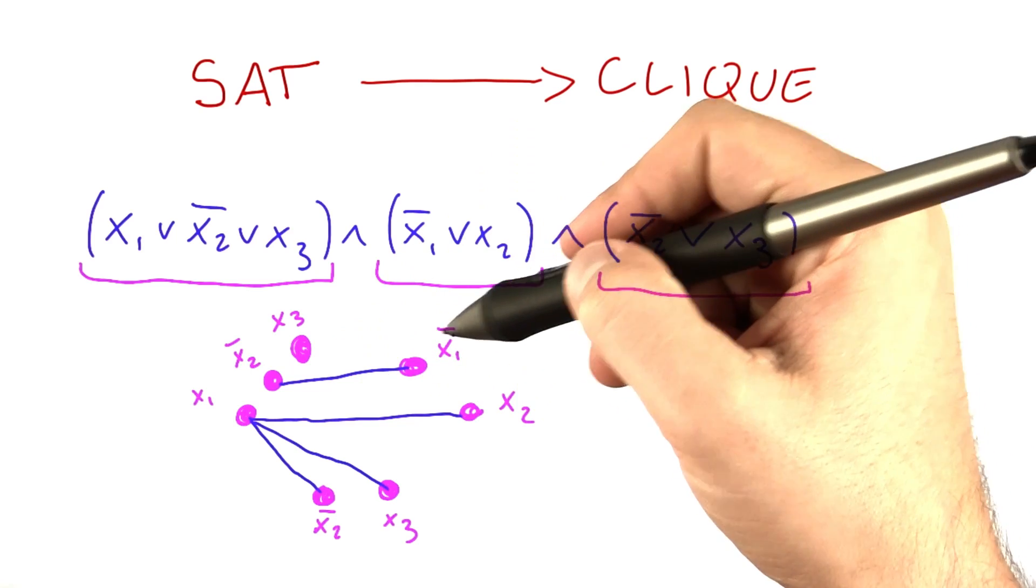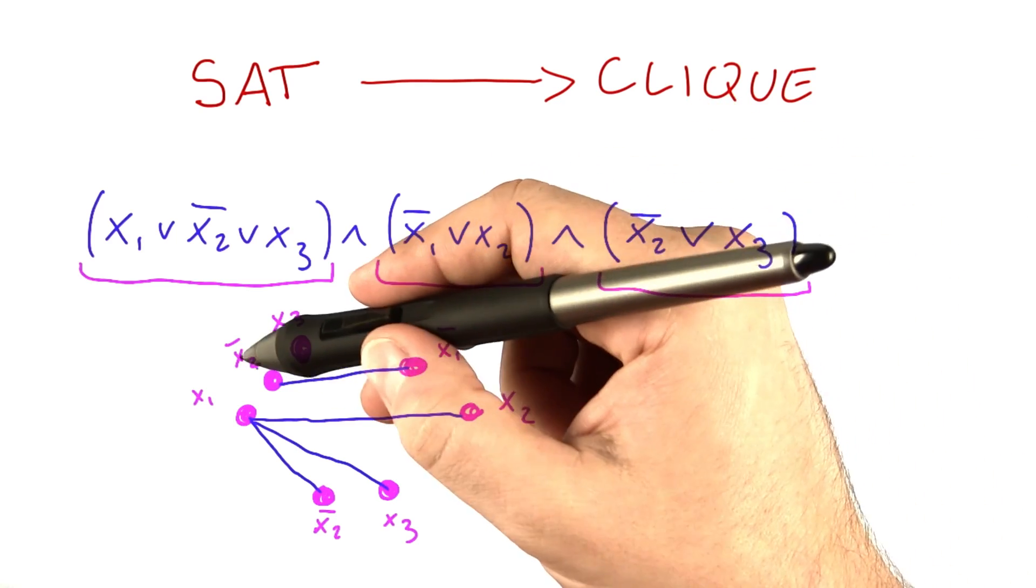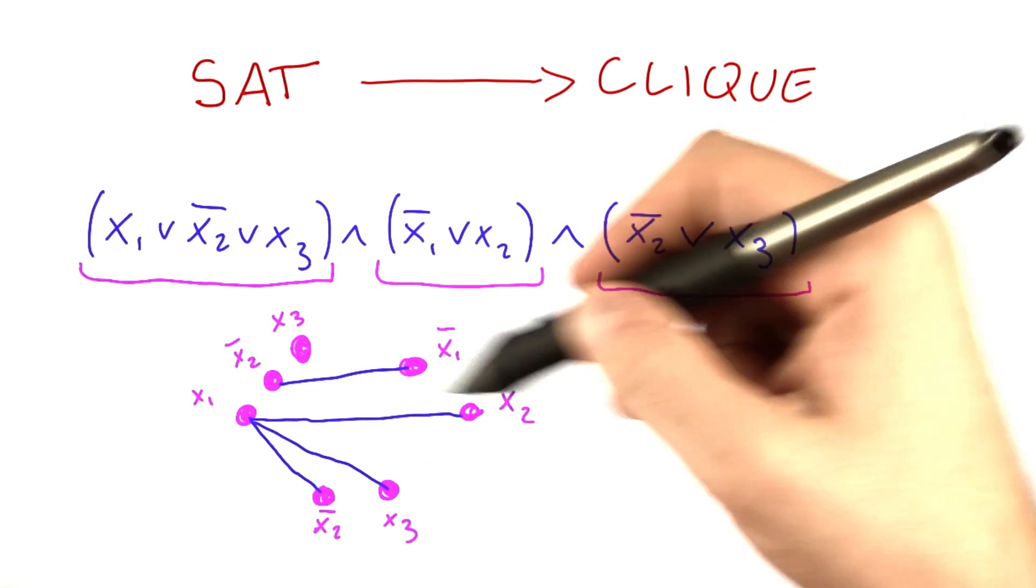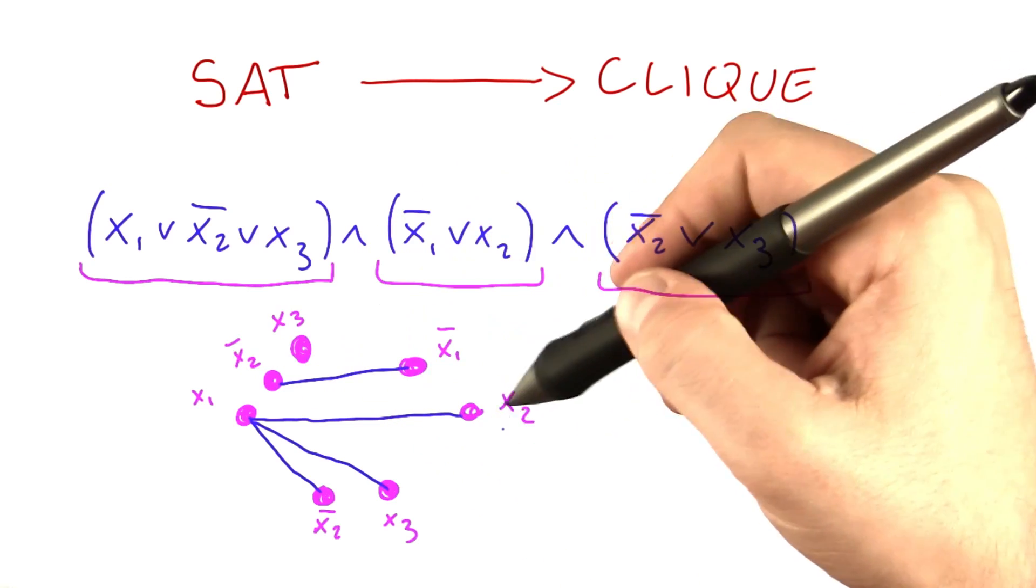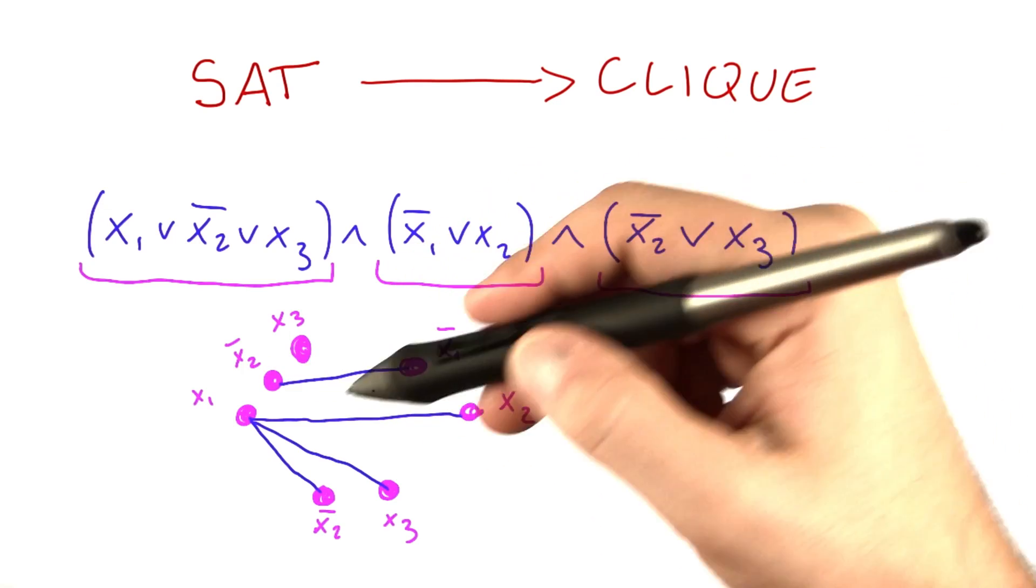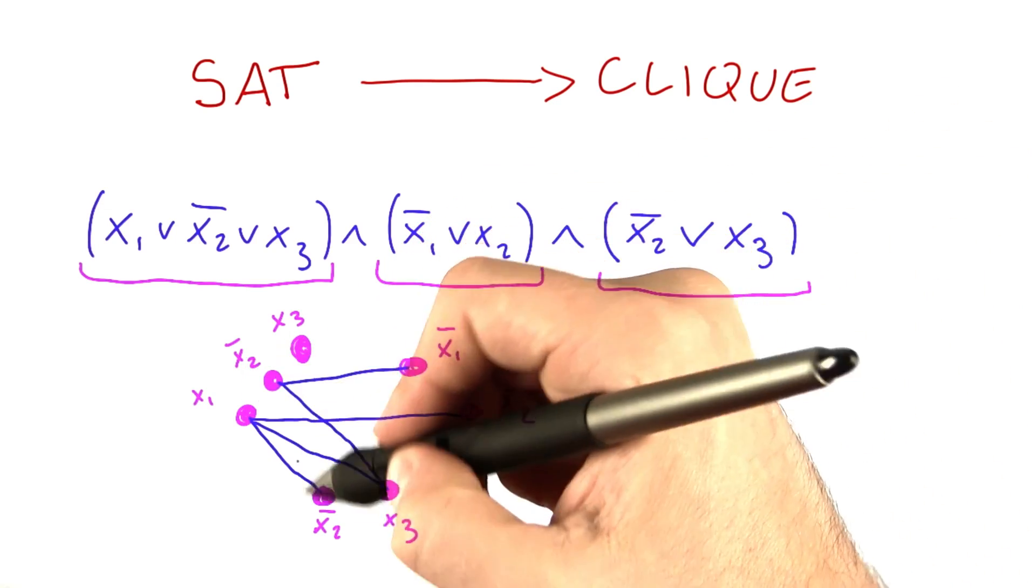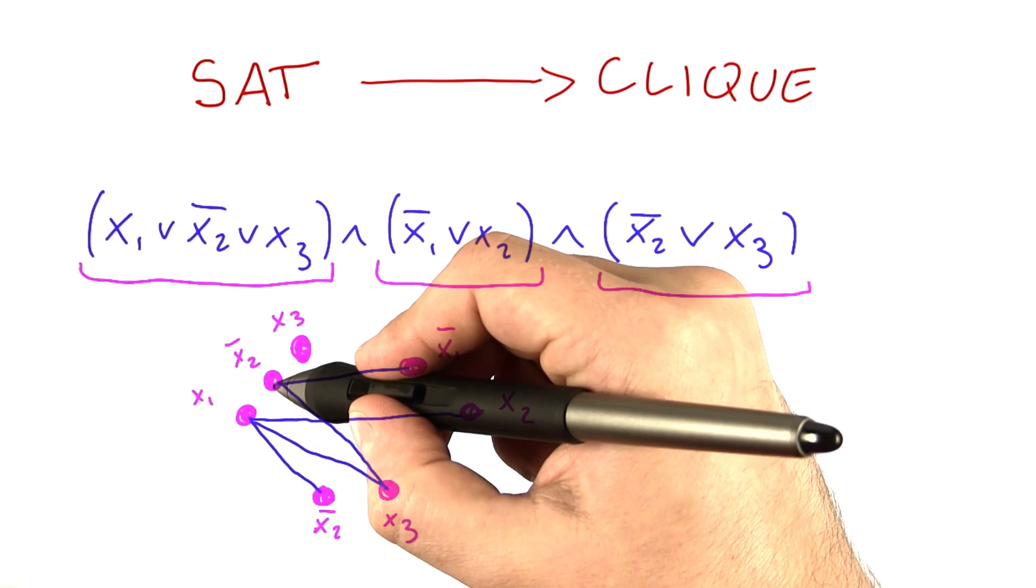So not x2, not x1, that's something we don't care about. That's something where we draw an edge. Not x2 and x2, again, here we have a not, here we do not have a not, so we don't draw an edge. And down here, that's fine. And here we have a case where we have not x2 and not x2. That's also fine.